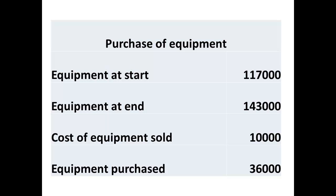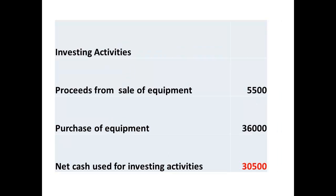To determine the value of equipment purchased, we take the value of the equipment at the start of the year, subtract the value for the sale of the loom, and then subtract this from the value at the end of the year. This will give us the figure for the cash paid for equipment purchased — a figure of $36,000. The sale of equipment less the purchase of equipment gives a figure of $30,500 as a cash outflow for investing activities.